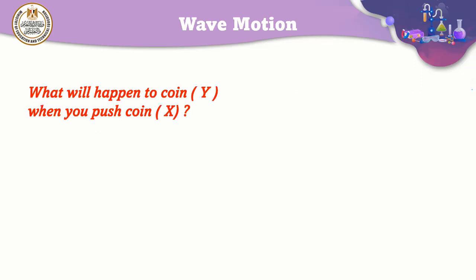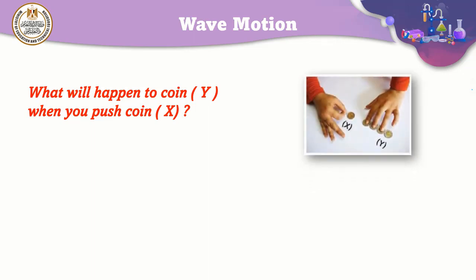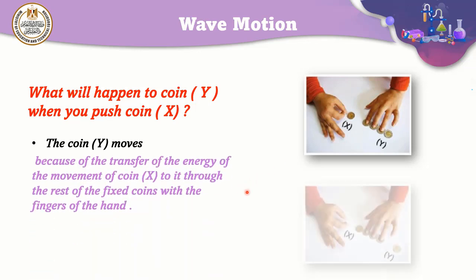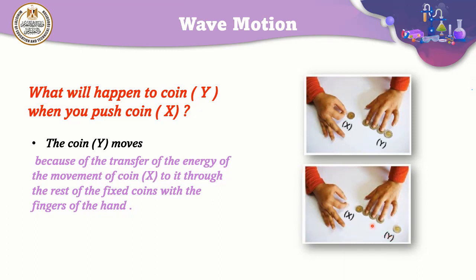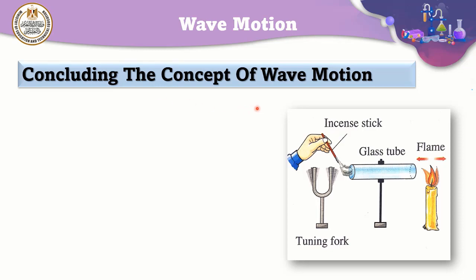Now we will do another simple experiment to simplify the concept of energy transfer. We will arrange a row of coins just like in the figure, and push coin X towards the first coin in the row. What will happen? Coin Y, which is the last coin in the row, will move. This shows the transfer of energy from coin X to the first coin in the row, then to the second, to the third, and finally when the energy reaches coin Y, it moves away from the other coins.